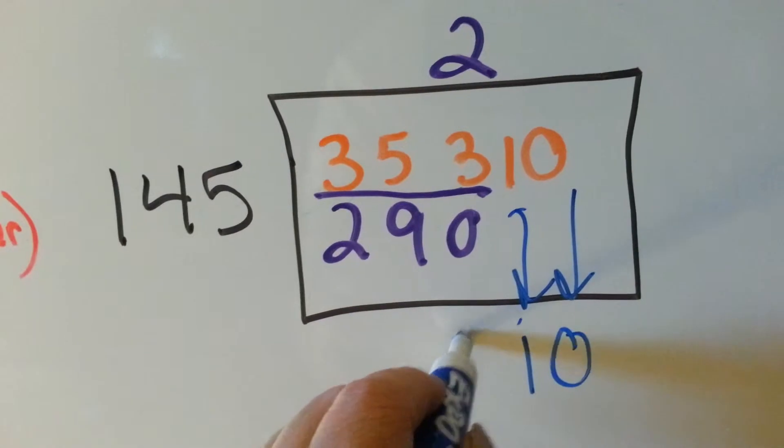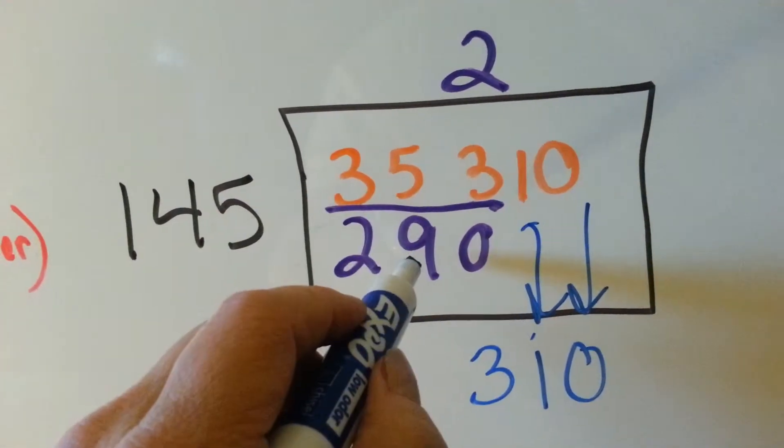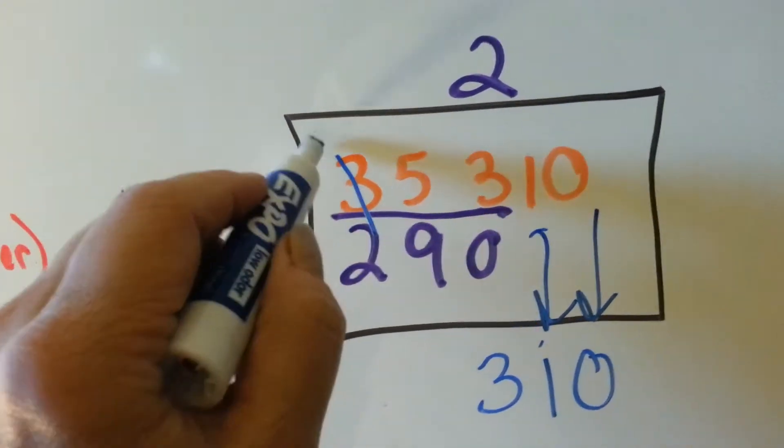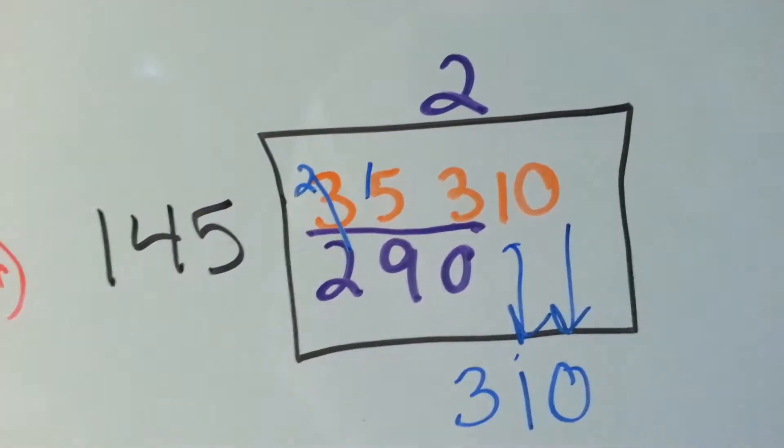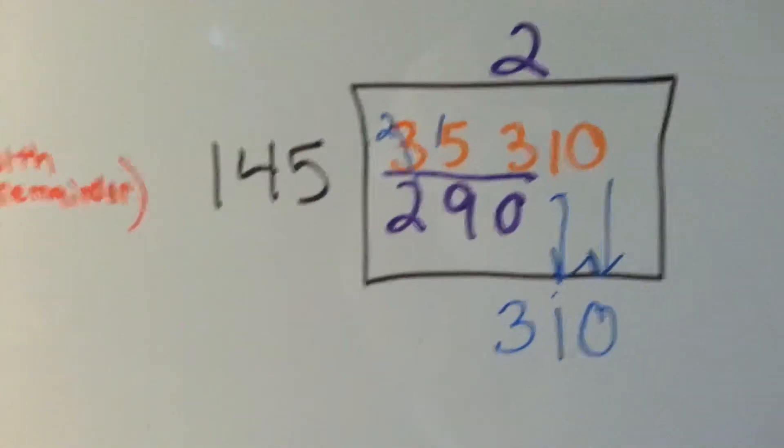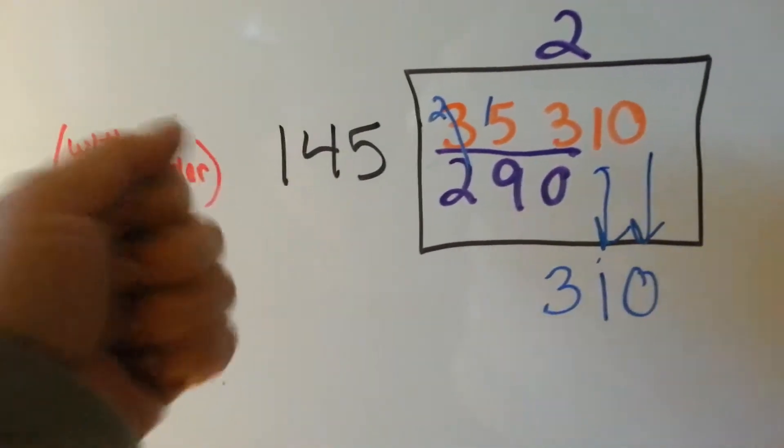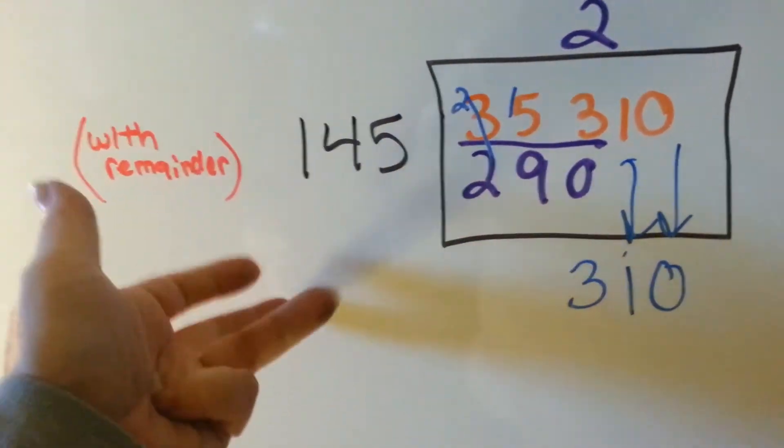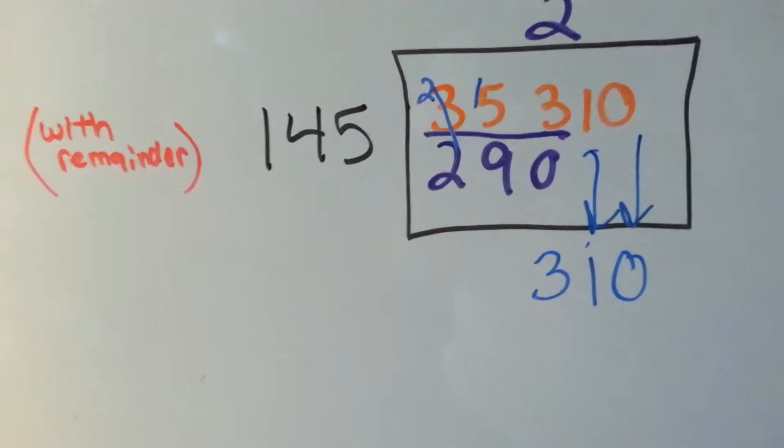3 take away 0 is 3. 5 take away 9, can't do it, got to borrow from this guy. He becomes a 2, that becomes a 15. 15 take away 9 is, you know, it's 6. 9, 10, 11, 12, 13, 14, 15, 6.